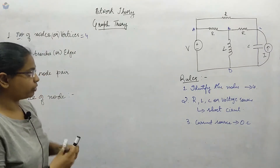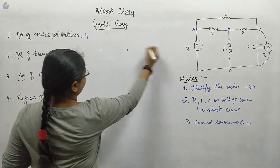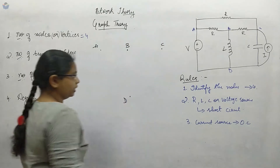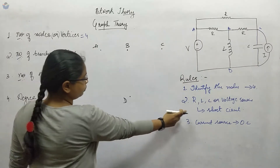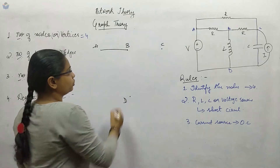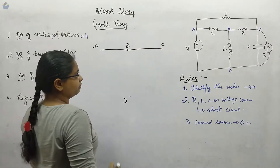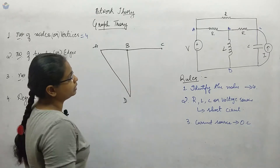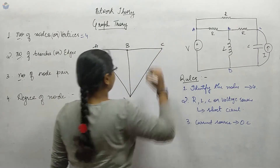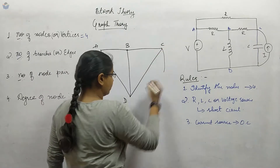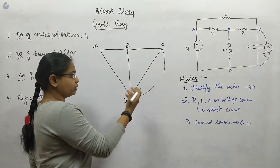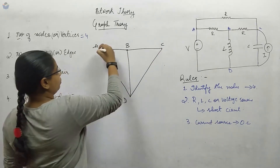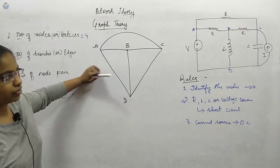Now I will draw the graph for this circuit. First, let me place the three nodes A, B, C, and D. From A to B we have a resistor, which we short-circuit. From B to C there is one more resistor. Then B to D has an inductor, and A to D has a voltage source — both short-circuited. C to D has a capacitor as well as a current source. For the current source it is open circuit, so you can leave it — it's understood as an open circuit path. And from A to C there is one more resistor.